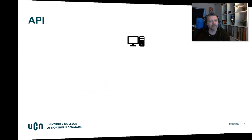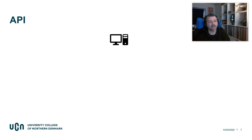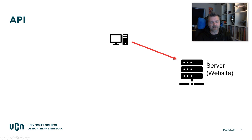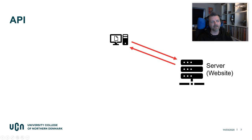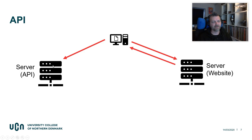In schematic form, we have the client — the user using a web browser — which contacts a server where our website is. They enter the URL and go to the website. The server accepts the request and sends information back for the client to display. When we use APIs, we usually contact another server as well — the browser requests more information from another server through an API.